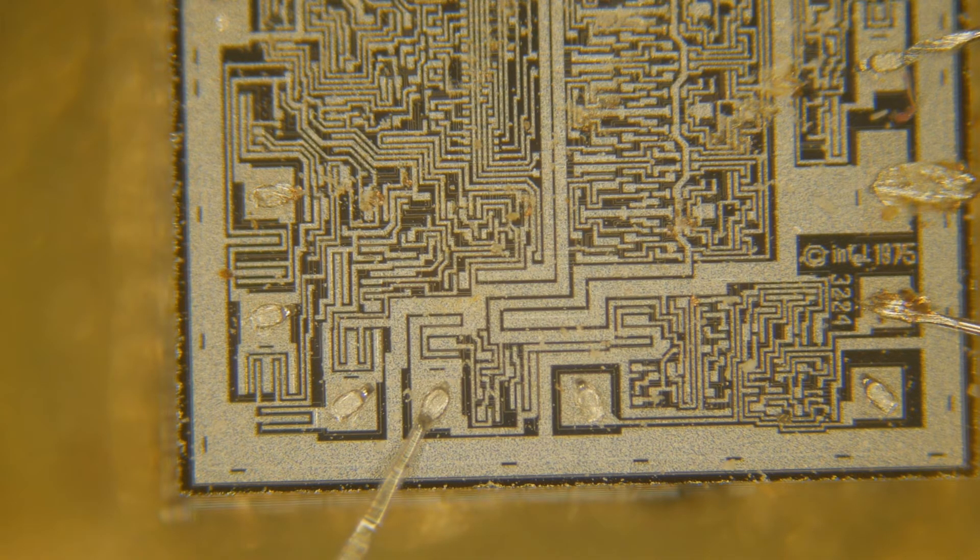And you can see the Intel 1975 there, the copyright. Underneath it is the 3224, that's probably the numerical designation for the chip itself. So the package part might be an 8224, maybe the package itself is a 5224, the chip is a 3224, maybe the schematic is a 1224.